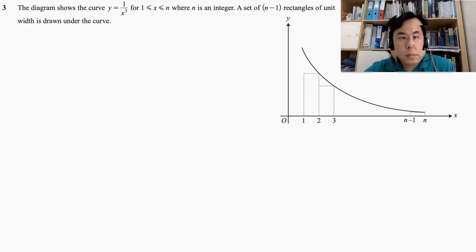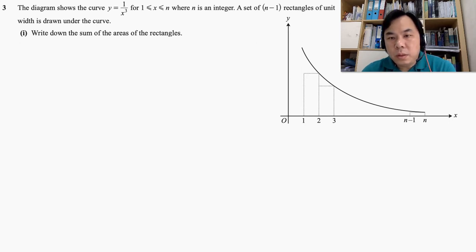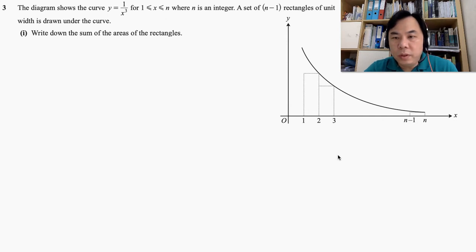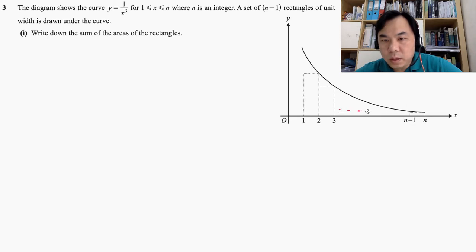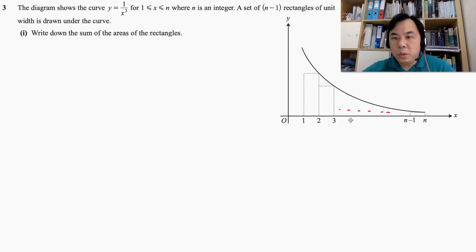Now the first question: write down the sum of areas of rectangles underneath the curve. Here you can see that we have generally 1, 2, and more rectangles. What they are saying is, if you have infinitely many rectangles that you can draw under the curve, what would be the sum of all the areas for these rectangles? Starting from n equal to 1, 2, 3, until n here. That is quite simple.